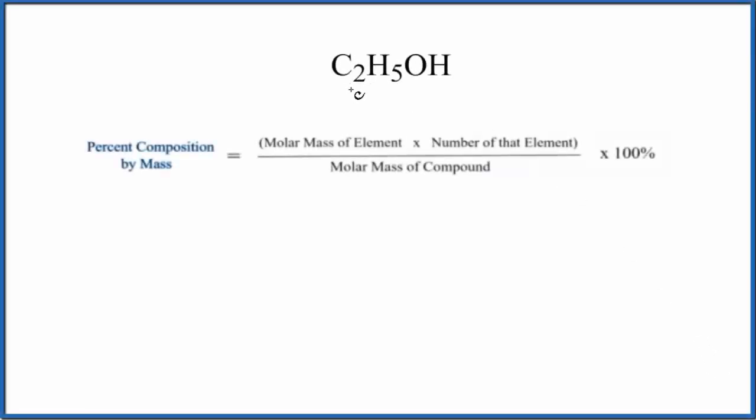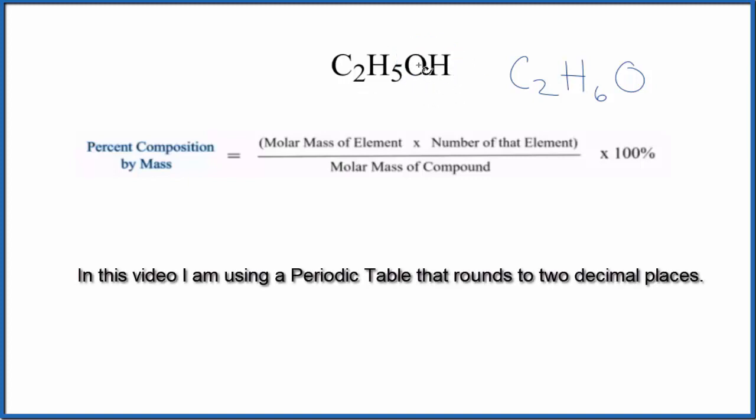In this video, we'll find the percent composition for each element in C2H5OH. Sometimes you'll see this written as C2H6O. It's the same thing. I like to see it this way because this OH, this is what makes it an alcohol. This is the alcohol functional group here. So either way, you'll get the same answer. Just be aware there's two different ways you may see this written.